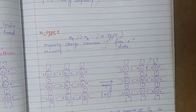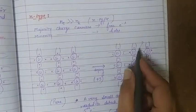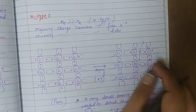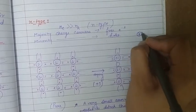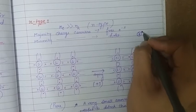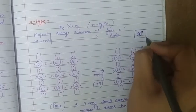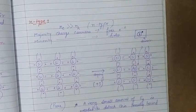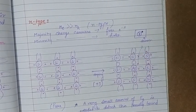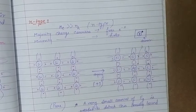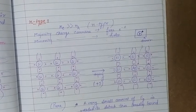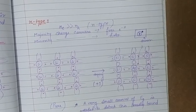In an n-type material, the impurity atom is ready to donate its electron and become a positive ion core. In the structure, we can represent it by a positive ion core with an electron associated with it — this represents the donor impurity, which is ready to donate its electron and become a positive ion core. This is called the donor core, and together with the electron it represents the donor impurity atom.